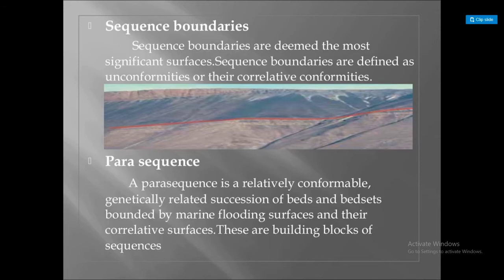Sequence boundaries are deemed the most significant surfaces. They are defined as unconformities or their correlative conformities, as shown in the image. A parasequence is a relatively conformable, genetically related succession of beds and bed sets bounded by marine flooding surfaces and their correlative surfaces. These are the building blocks of sequences.